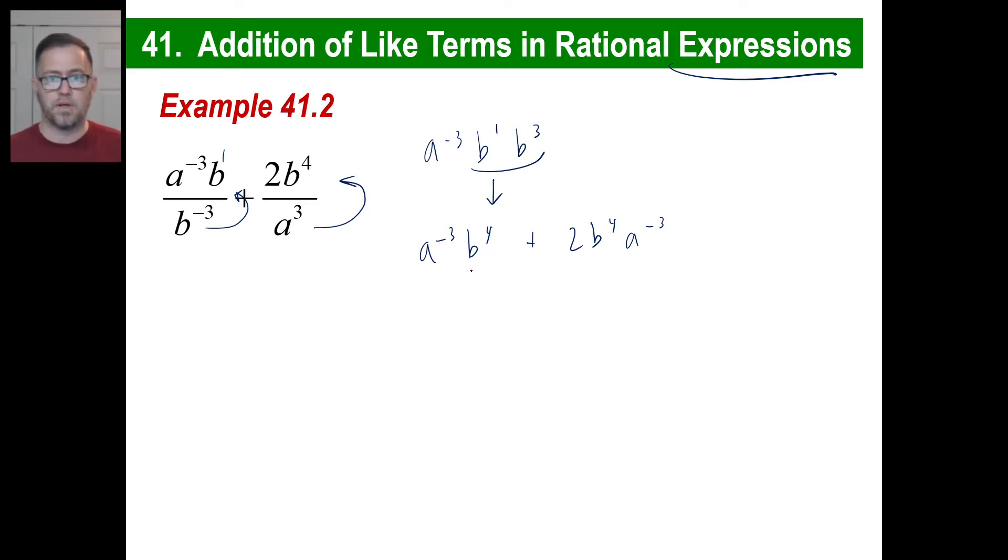So this becomes A to the negative third times B to the fourth, right? Plus 2B to the fourth. And if we move this up here, that turns into A to the negative third. Make sense? Well, look at these. Are these like terms? A to the negative third, A to the negative third. B to the fourth, B to the fourth. Yep. They're like terms. They match. So if there isn't a number there, you know there's a one. So I have one of something plus two of something. That gives me three of something. So I'm just going to go ahead and put it in alphabetical order. A to the negative third and then B to the fourth. And that is my answer.